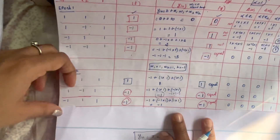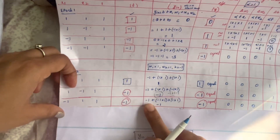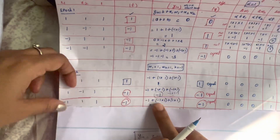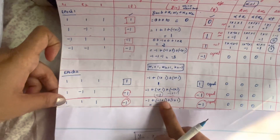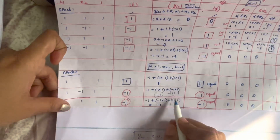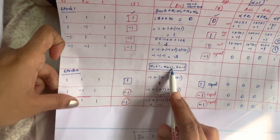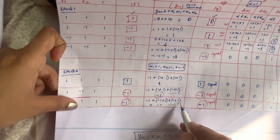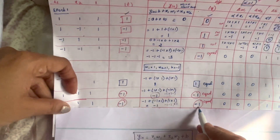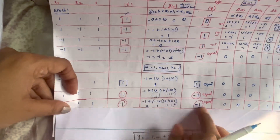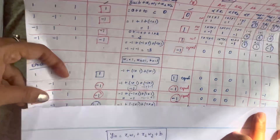Third set of inputs in approach 2: x1=-1, x2=1, bias=1, target=-1. y_in = -1 + (-1)*1 + 1*1 = -1 - 1 + 1 = -1. Since y_in = -1 < 0, y = -1. Comparing y=-1 and t=-1, they are equal, so there is no change in weight. Weights remain w1=1, w2=1, b=-1.